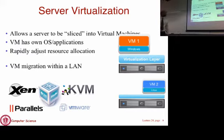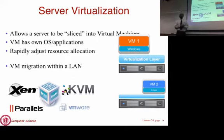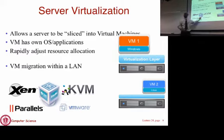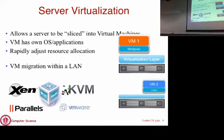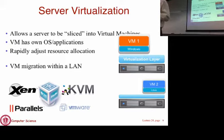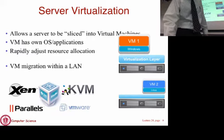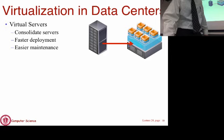Here are examples of virtualization products available. Xen and KVM are open-source virtualization technologies built into the Linux kernel for creating virtual machines inside Linux. VirtualBox is a free desktop virtualization tool, similar to VMware. Parallels and VMware are commercial products. Type 2 hypervisors run on top of an operating system; Type 1 hypervisors boot directly — you boot up the virtualization software, which has its own OS-like functionality.